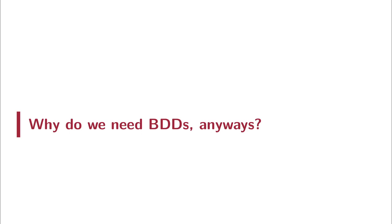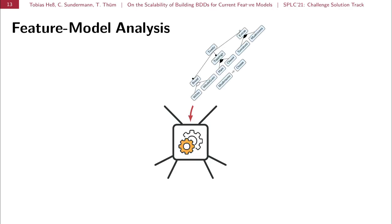So, why do we need BDDs anyways, which is also a paraphrasing of one of our reviewers' comments? Well, we want to analyze feature models. And analyzing feature models typically works as follows. We have a feature model and we plug this into a machine. And this machine then tells us, these are your dead features, features that do not appear in any valid configuration. These are your core features, features that appear in every valid configuration. These are your false optional features, which are features that are optional in the feature diagram, but due to cross-tree constraints are in fact mandatory. Or we get an answer that our feature model is void, so that there is no valid configuration at all.